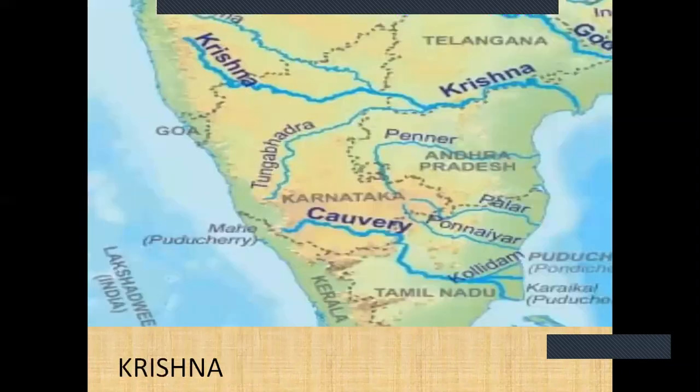The next river is Krishna River, also called Krishnaveni. It is the major source of irrigation for Maharashtra, Karnataka, Telangana, and Andhra Pradesh.